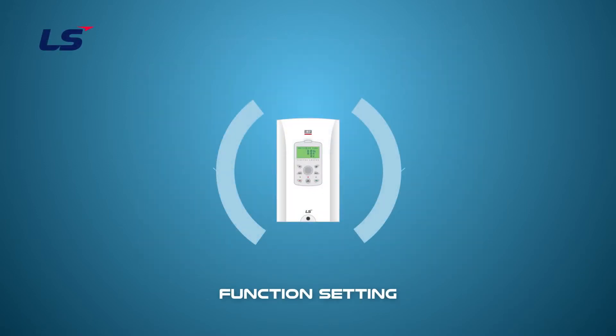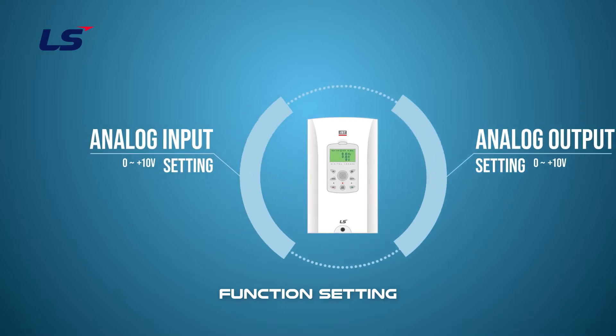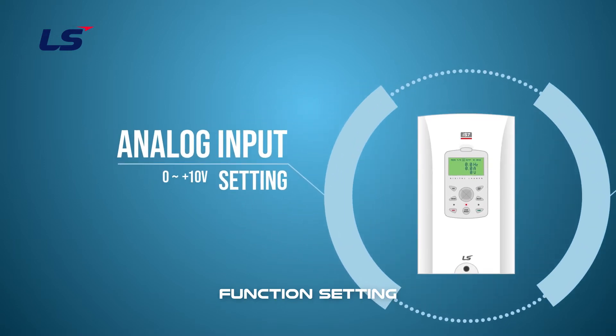Next, we will learn how to set the analog input-output range. First, let's learn how to set the target frequency with the analog 0 to plus 10 volts input.